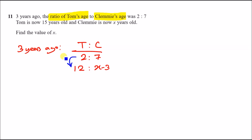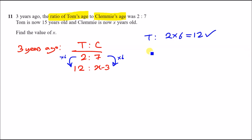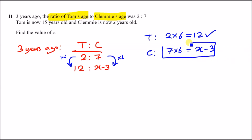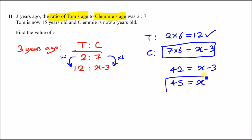To get from 2 to 12 we multiply by 6. Since both sides of a ratio must be treated the same way, Clemmy's age three years ago equals 7 × 6 = 42. So x − 3 = 42, giving x = 45. Clemmy is currently 45 years old.